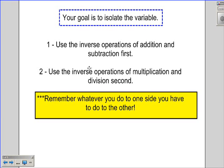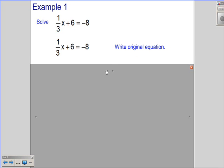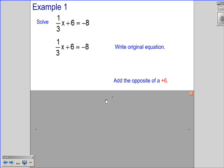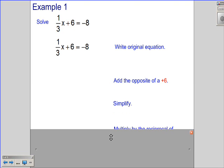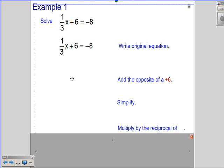And remember, whatever we do to one side, you must do to the other side. So I'm looking at this problem, one-third x plus six equals negative eight. I need to get that variable by itself. The first step I'm going to do is just rewrite the equation. I always want to show my work. In order to get this variable by itself, I need to get rid of all the other stuff first. So how do I get rid of a plus six? I'm going to add the opposite of that plus six.